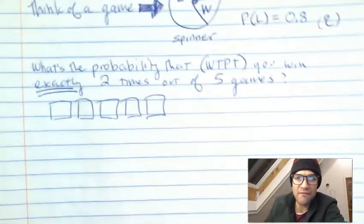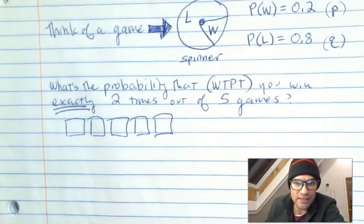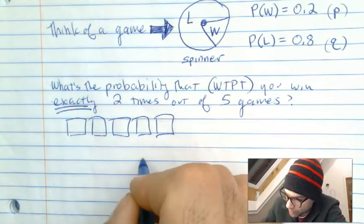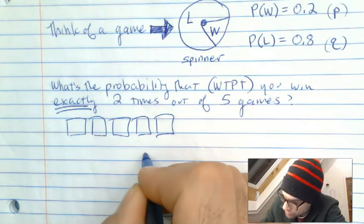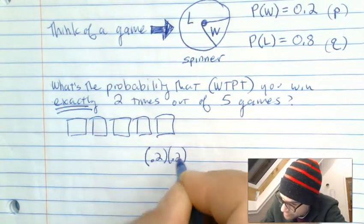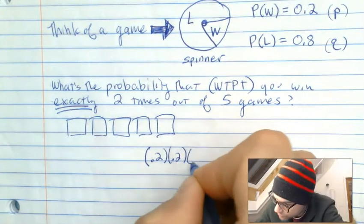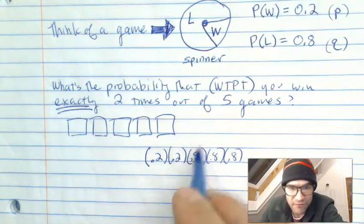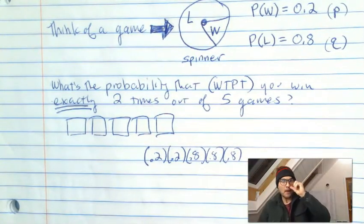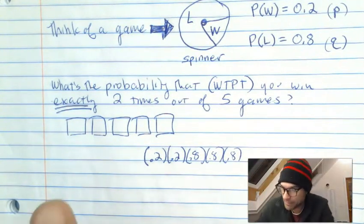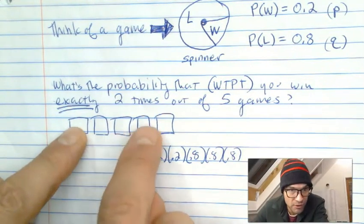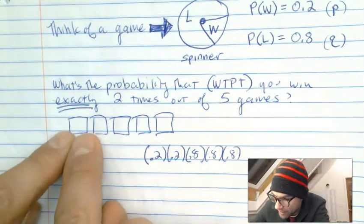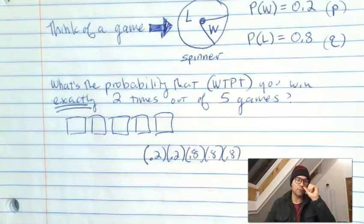Think about what would have to happen if I was going to win exactly two times out of five games. I'd have to win twice — so 0.2 would have to happen twice — and I'd also have to lose three times. So I'd have to have two wins and three losses. But there are a lot of ways that could happen: win, win, lose, lose, lose, or win, lose, win, lose, lose, and so on.